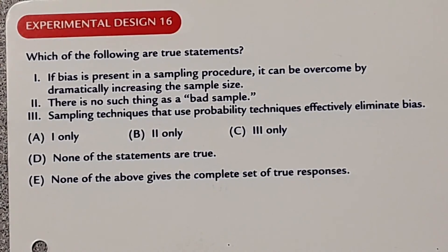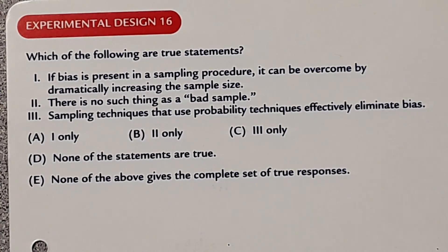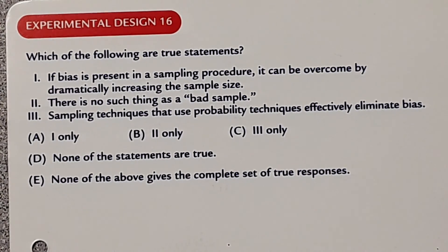The next question asks which of these statements are true: (1) if bias is present in a sampling procedure it can be overcome by dramatically increasing the sample size; (2) there is no such thing as a bad sample; (3) sampling techniques that use probability effectively eliminate bias. The answer choices are: one only, two only, three only, none of the statements are true, or none of the above gives the complete set of true responses.